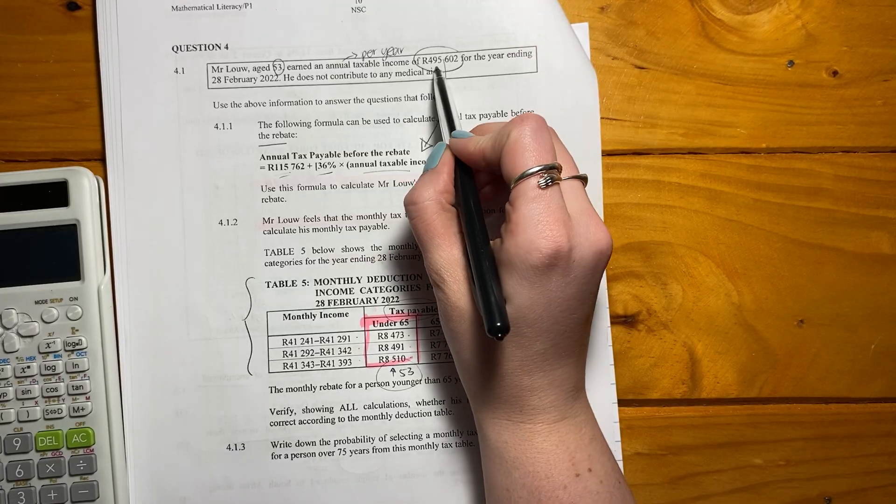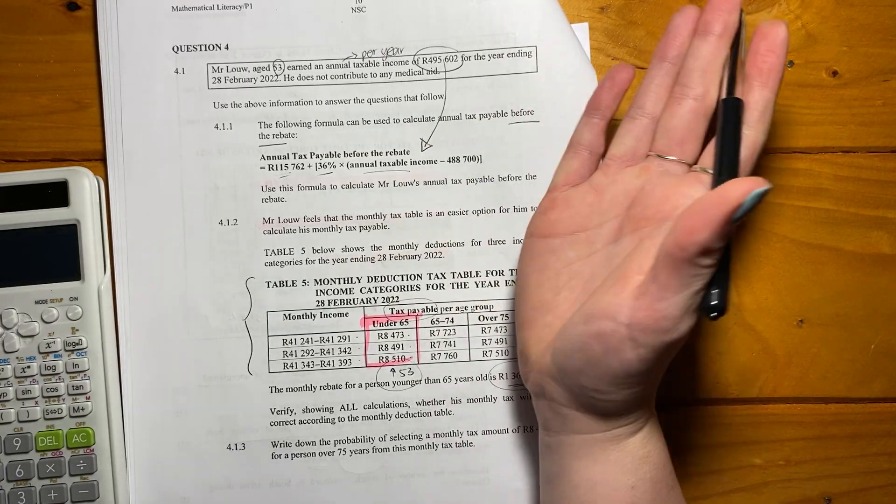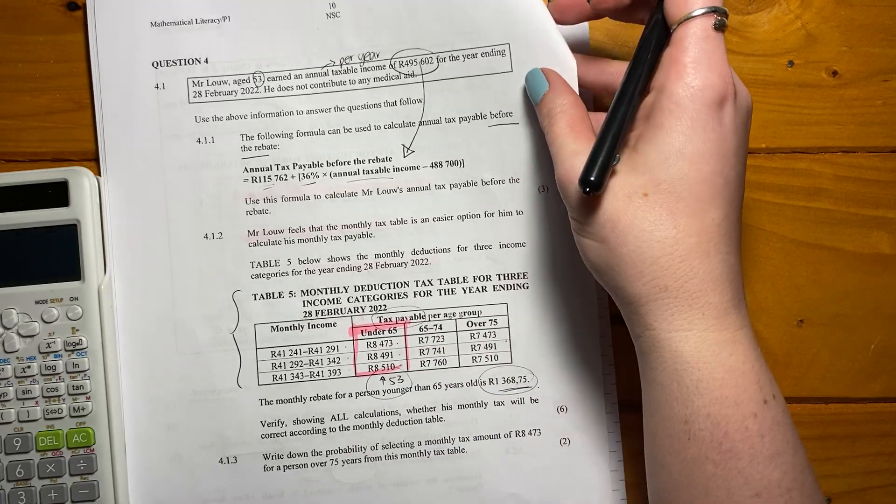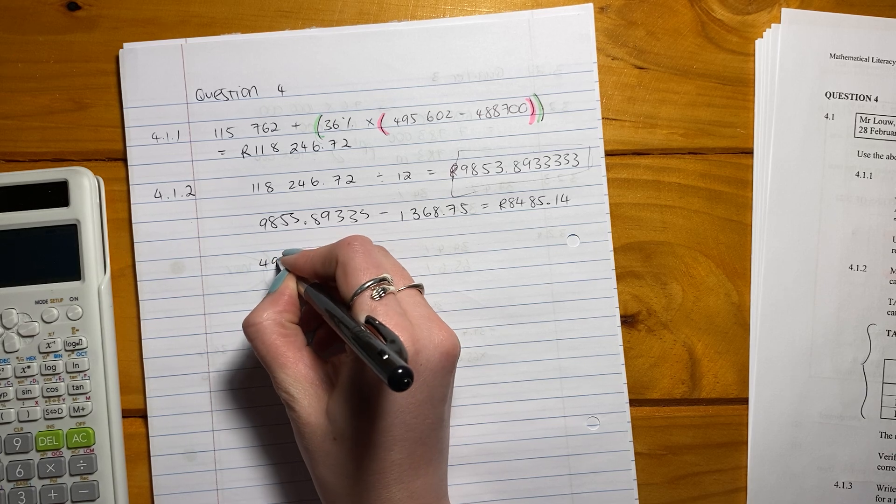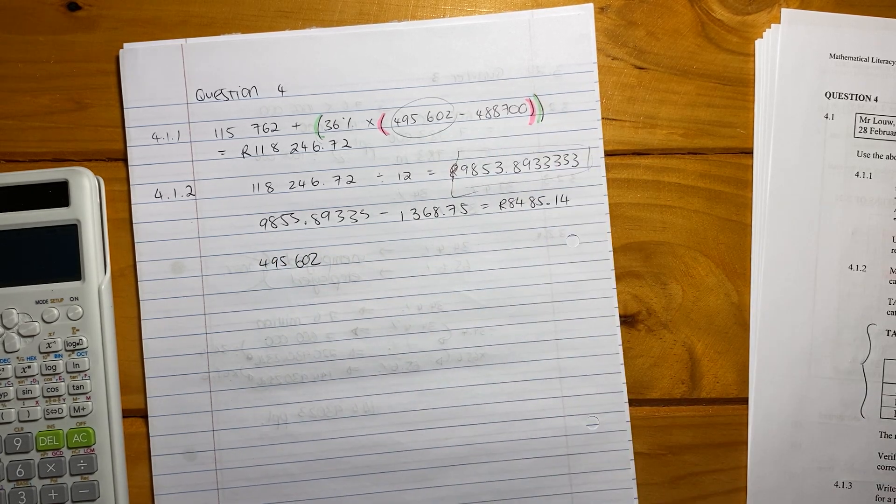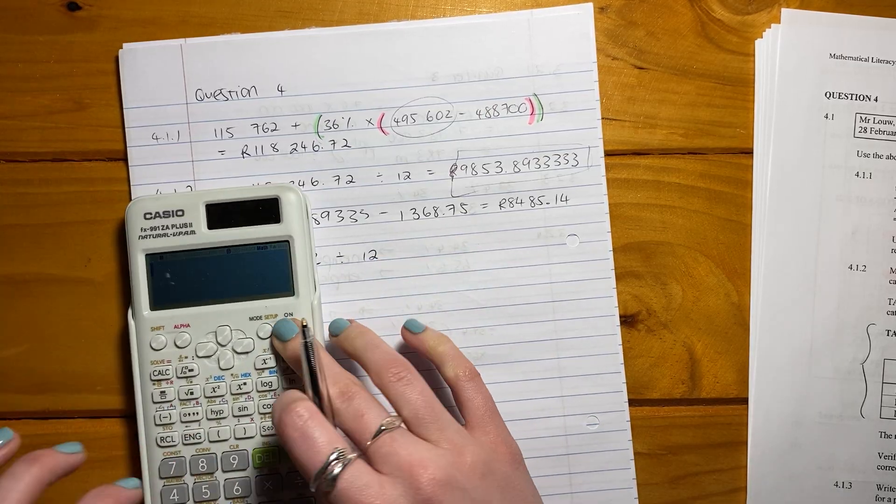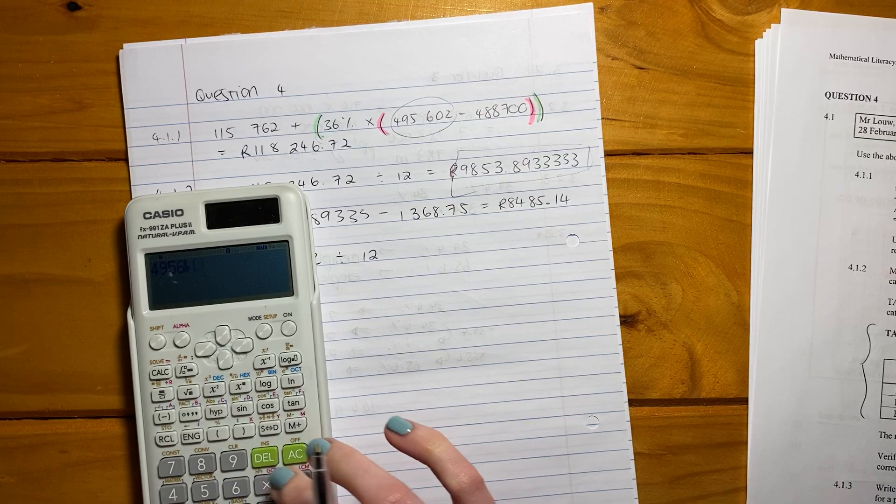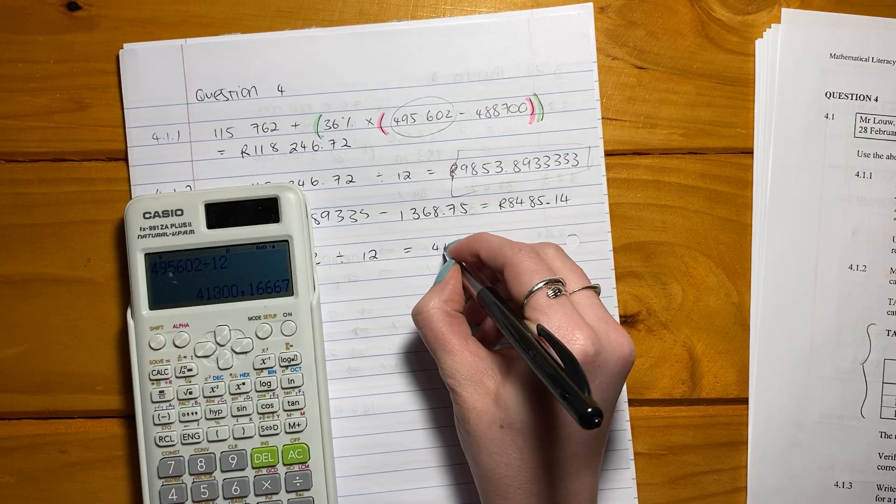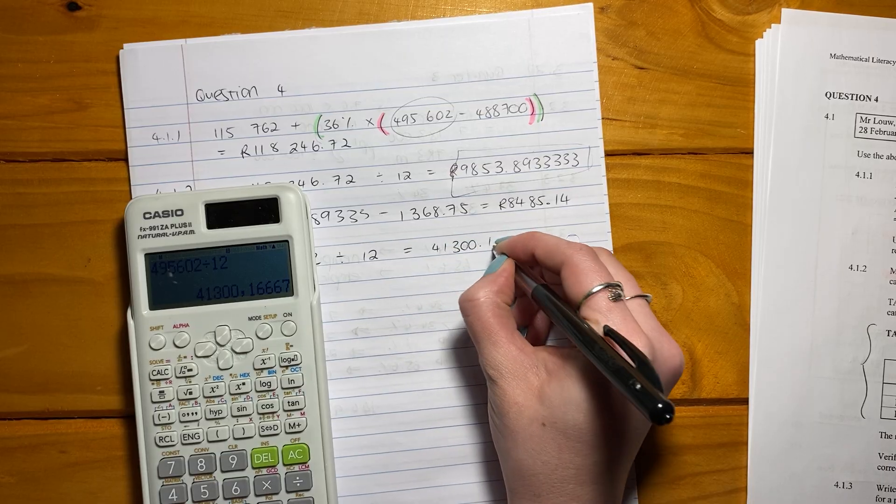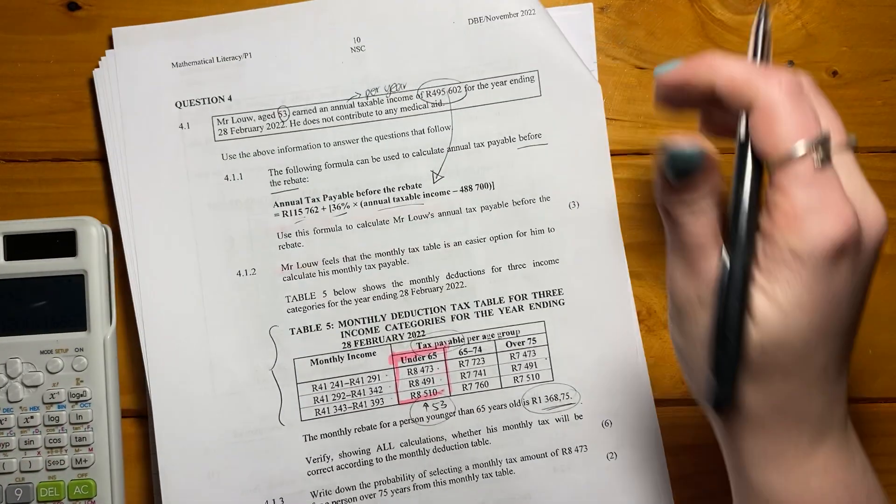Well, it says monthly income. So we just have to take this amount here and divide it by 12. And that will give us his monthly income. And then we'll know which one of those three amounts he'll pay. So we're going to say 495,602. That's his annual income. And we're going to divide it by 12. So 495,602 divided by 12, and it is 41,300.16667. So if he's earning that much, where would he sit?